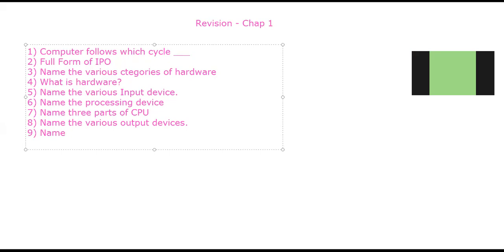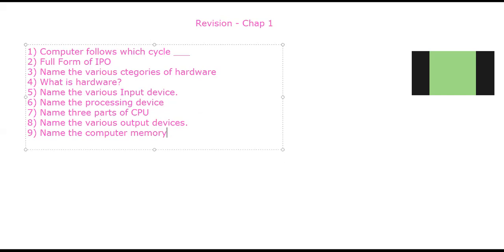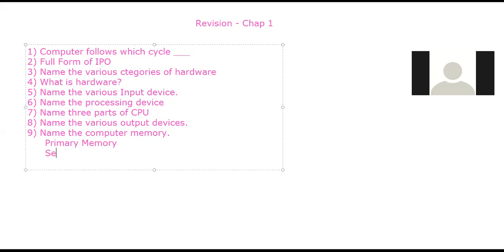What is the use of storage devices? Storage devices are used to store a large amount of data for a long term. Name the two parts of computer memory or computer storage. They are primary storage — or primary memory — and secondary memory.